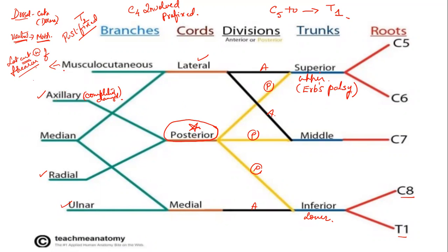There is also the axillary nerve and radial nerve with many applied aspects. C8 and T1 form the lower trunk. Sometimes C4 is also involved — in that case we call the plexus prefixed. If T1 is involved and T2 is also involved, we call it postfixed. You can only determine this on MRI or dissection.